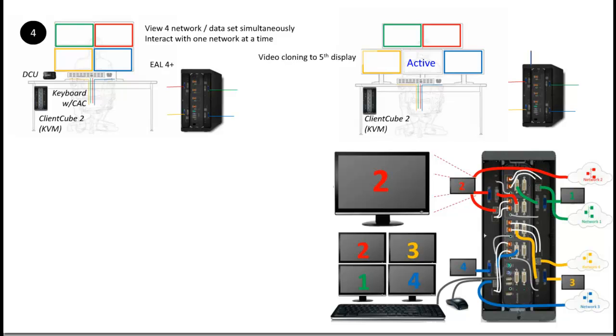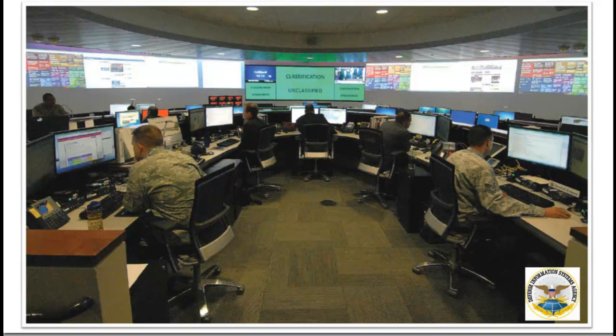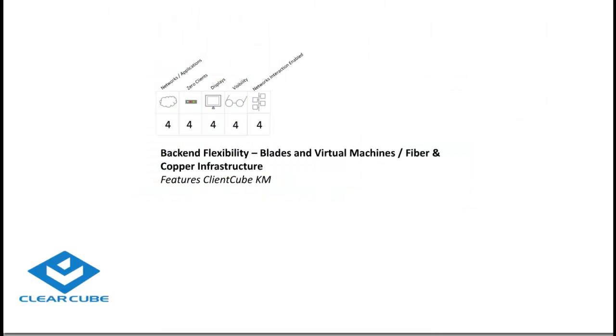Here are some variations as you start looking at operating system environments. This is a DISA headquarters location. So far we've talked about client separation and network separation — those two elements are done at the zero clients as they are integrated into the ClientCube. Each ClientCube has a set of zero clients, and each zero client has a dedicated network path to the back end, which could be many different options.